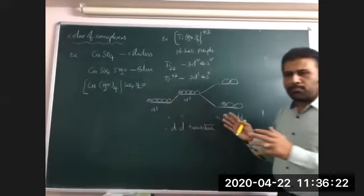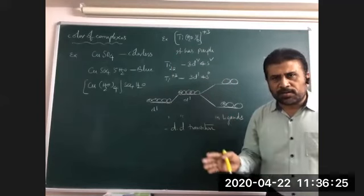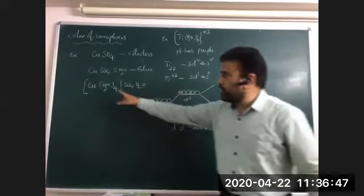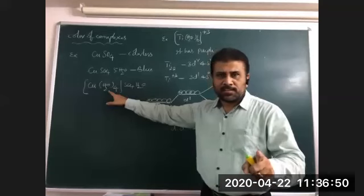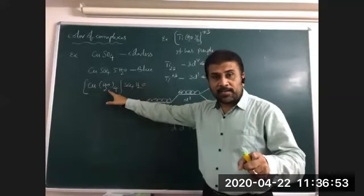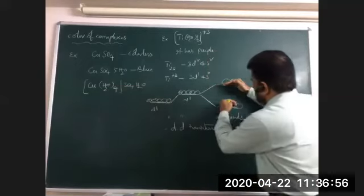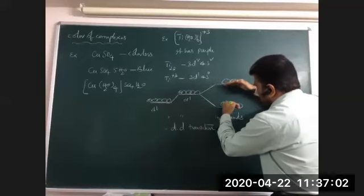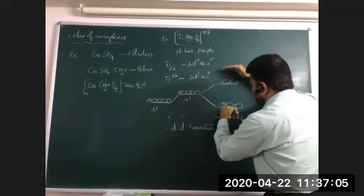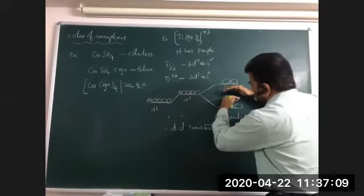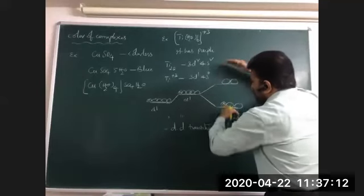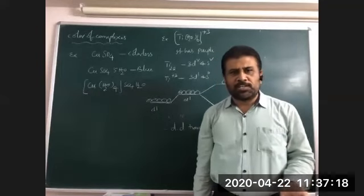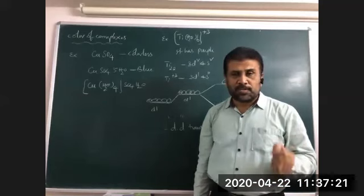So all complex compounds are colored because of d-d transition. That color is due to ligands. If the ligand is changed, the color also changes — because the ligand creates the field that makes the energy difference. Water may be a weak ligand so delta will be less; CO will give more; cyanide gives less than CO; ammonia gives less than cyanide. If the field changes, energy difference changes; if wavelength changes, color changes.